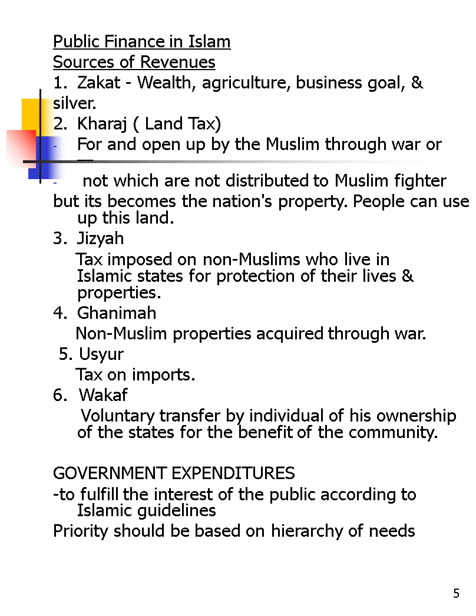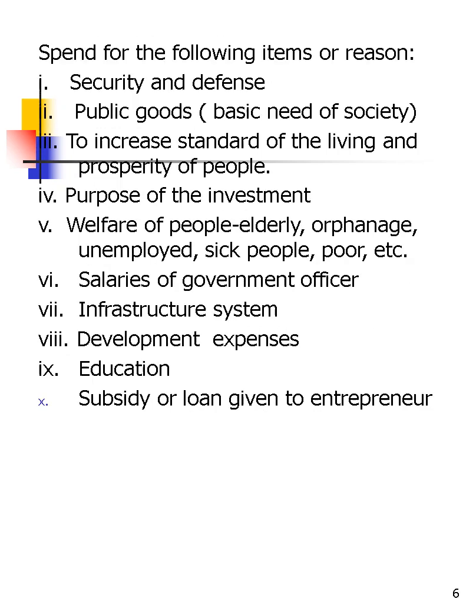For government expenditure in the Islamic path, they have to fulfill the interests of the public according to Islamic guidelines, and priority should be based on the hierarchy of needs. Expenditure is spent for security, public goods, increasing standards of living and prosperity of people, investment purposes, and welfare — for poor people, sick people, unemployed people, and elderly people. Additionally for salaries of government officers, infrastructure, system development, education, and subsidies or loans or gifts to entrepreneurs.